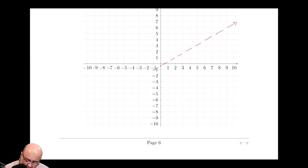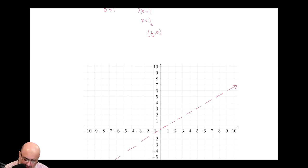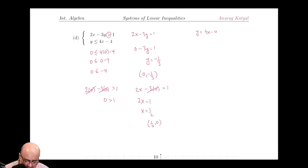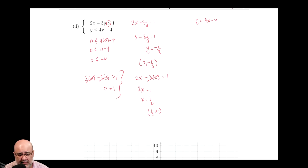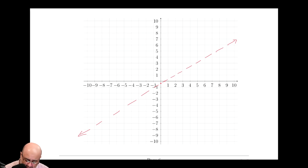And then I can plug in the origin, which I did right here. So the 0 makes everything go away, leaving behind 0 is greater than 1, which is false. 0 is not greater than 1, so that's telling a lie, so we have to go away from it. So this whole thing gets an x.